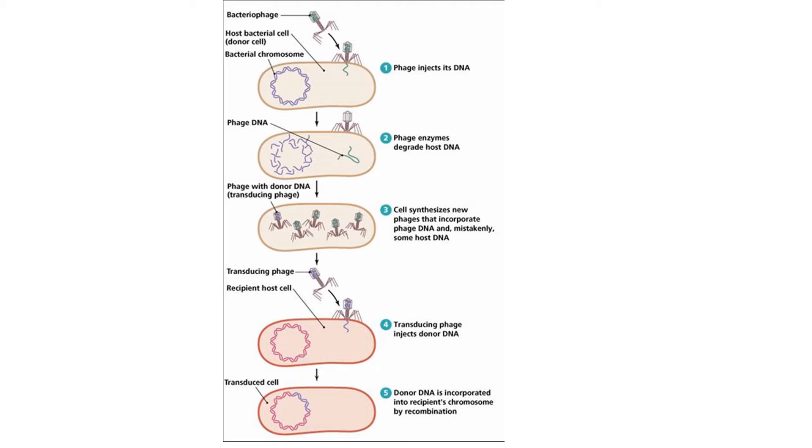The first step is that the phage injects its DNA into the donor bacterium. Its plan is to take over the donor bacterium's host cell machinery to make progeny phages.